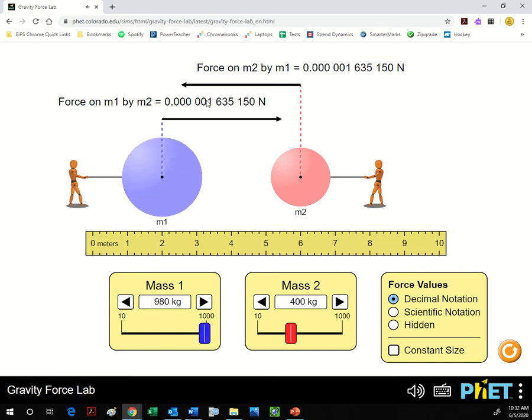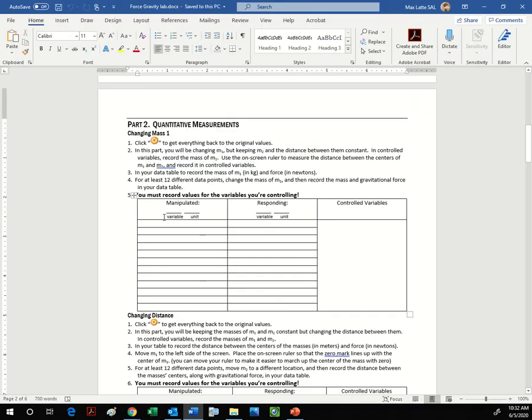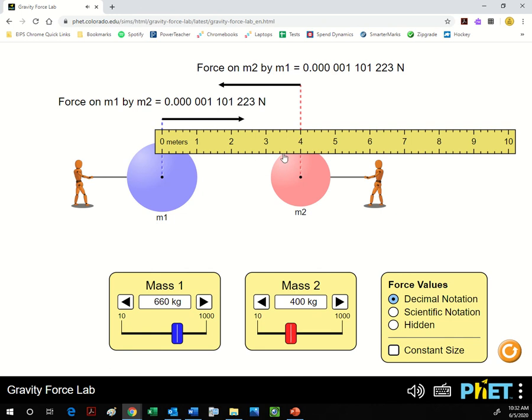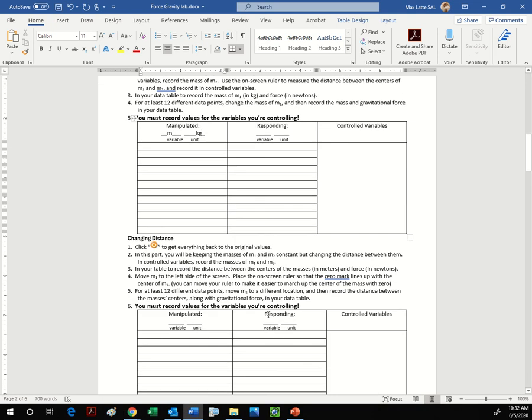And you can manipulate it however you see fit, and then your responding variable is the force that they exert on each other. So manipulate it down here, responding here. Your variable that you're manipulating is mass and your units would be kilograms. That's what I'm looking for for them. So it's really important that you record your controlled variables. So as I manipulate mass one, you can see that I control mass two. So write down what you control and also write down the radius that you're using to control it. You can use any radius, you just have to control it when you're manipulating mass one.